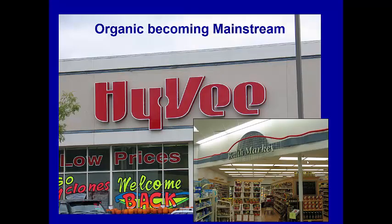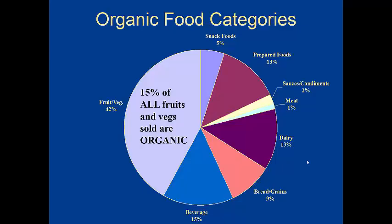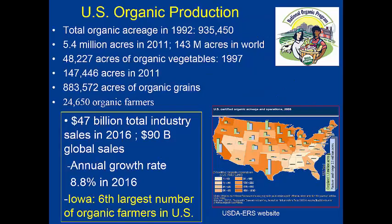Organic is becoming more and more mainstream — even organic beer is now advertised on TV. When you look at what organic foods are consumed, the majority — 42% — is in fruits and vegetables. In 2017, 15% of all fruits and vegetables sold in the marketplace were organic, making them the 'gateway crops' where most people begin consuming organic food.